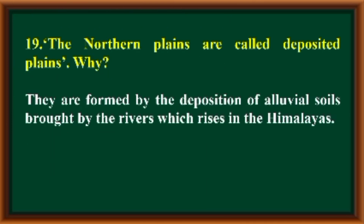The Northern Plains are also called deposited plains. Why? They are formed by the deposition of alluvial soils brought down by the rivers which rise in the Himalayas.